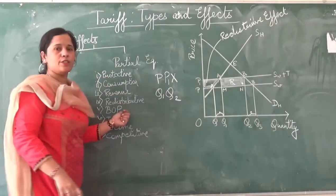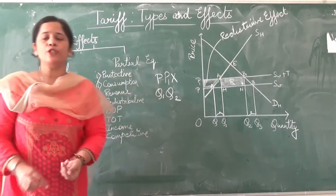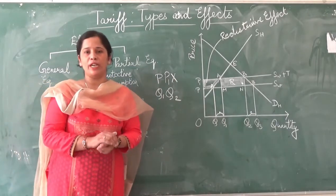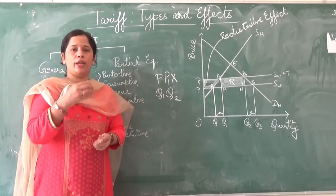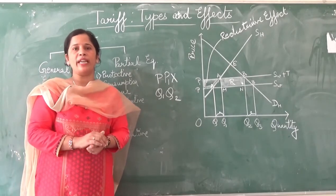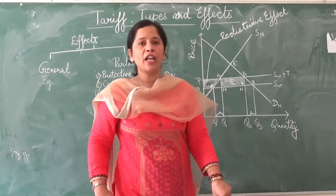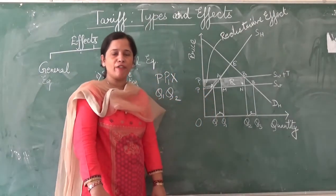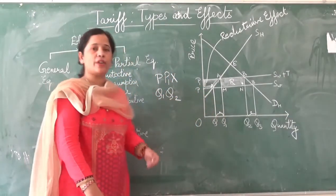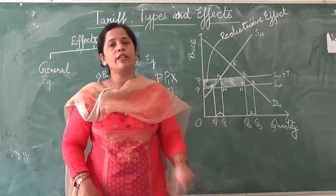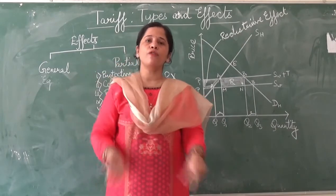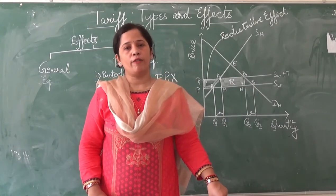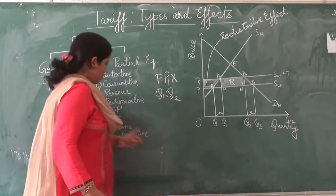The fifth is the balance of payment effect. With the imposition of a tariff, the balance of payment becomes favorable for the tariff-imposing country, because less of the commodity is imported, meaning international expenditure decreases. The sixth is the terms of trade effect, which is also favorable for the tariff-imposing country because the country is importing a lesser amount of the commodity.